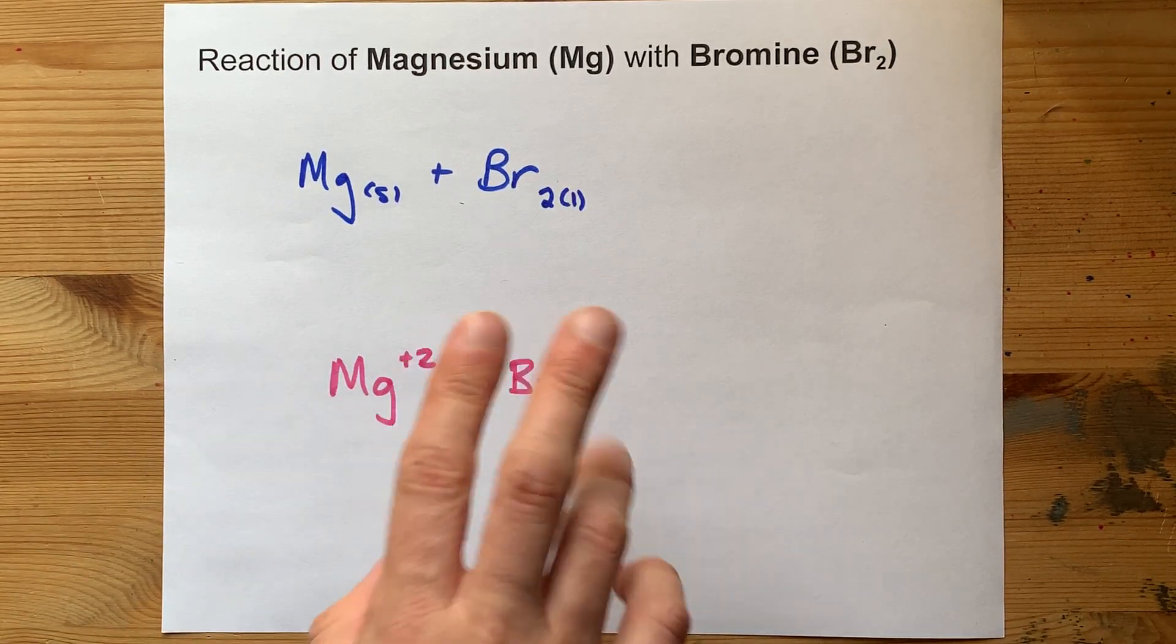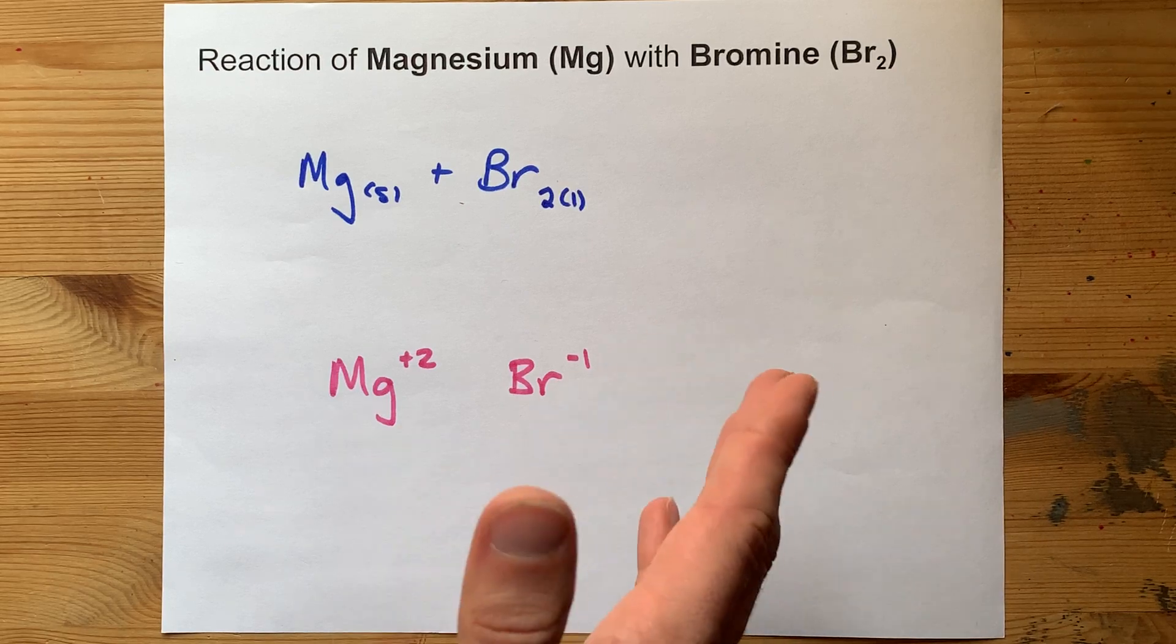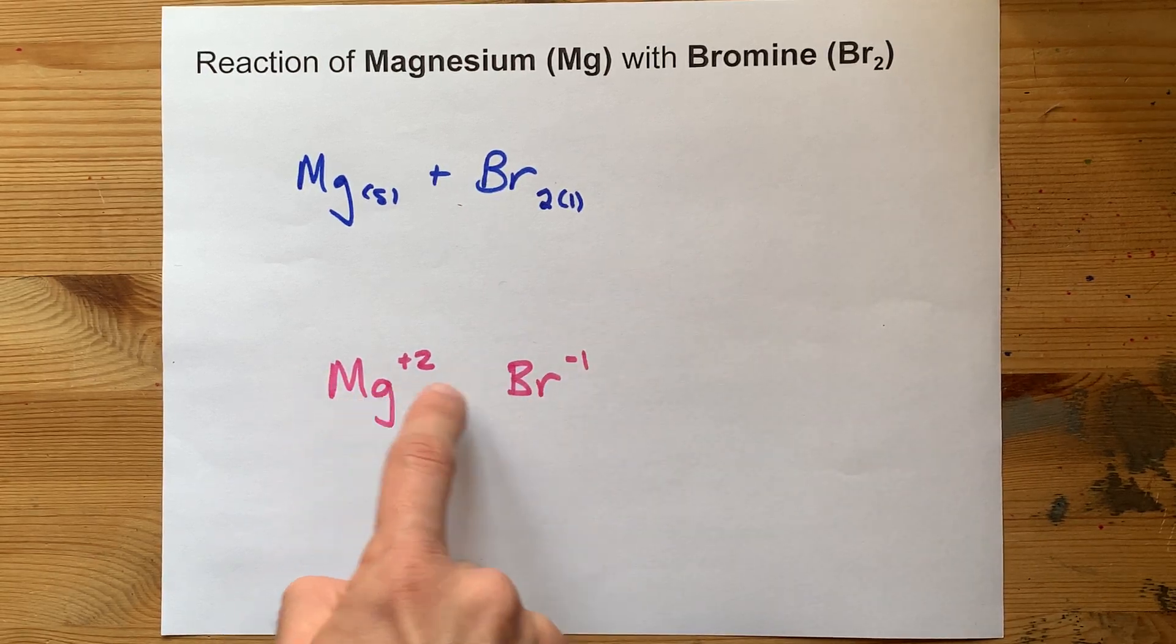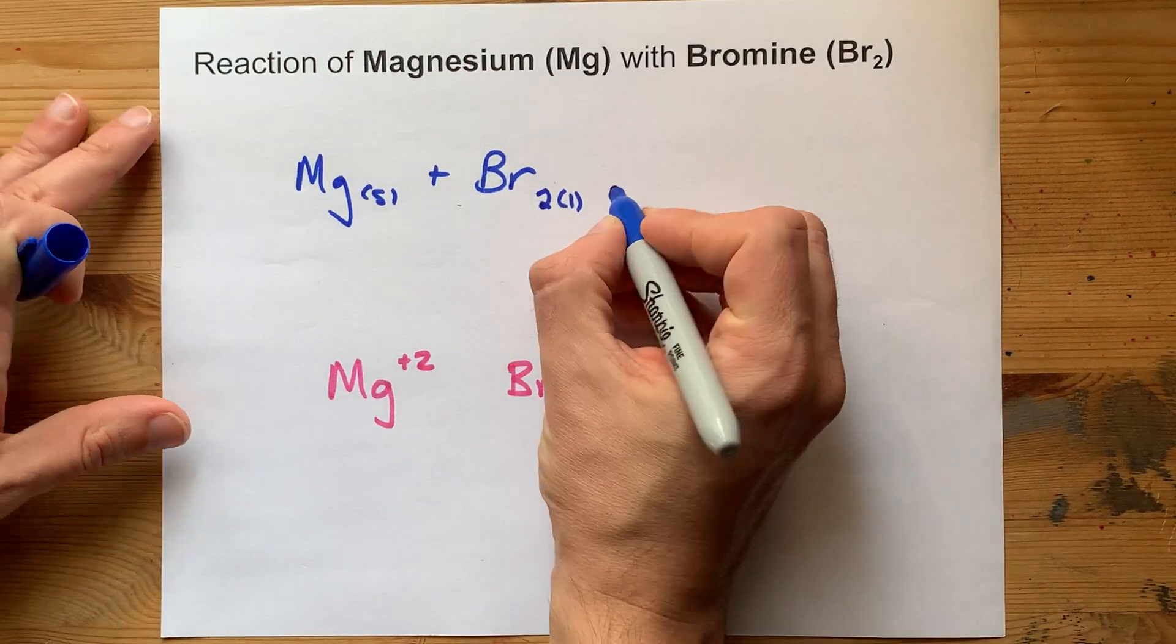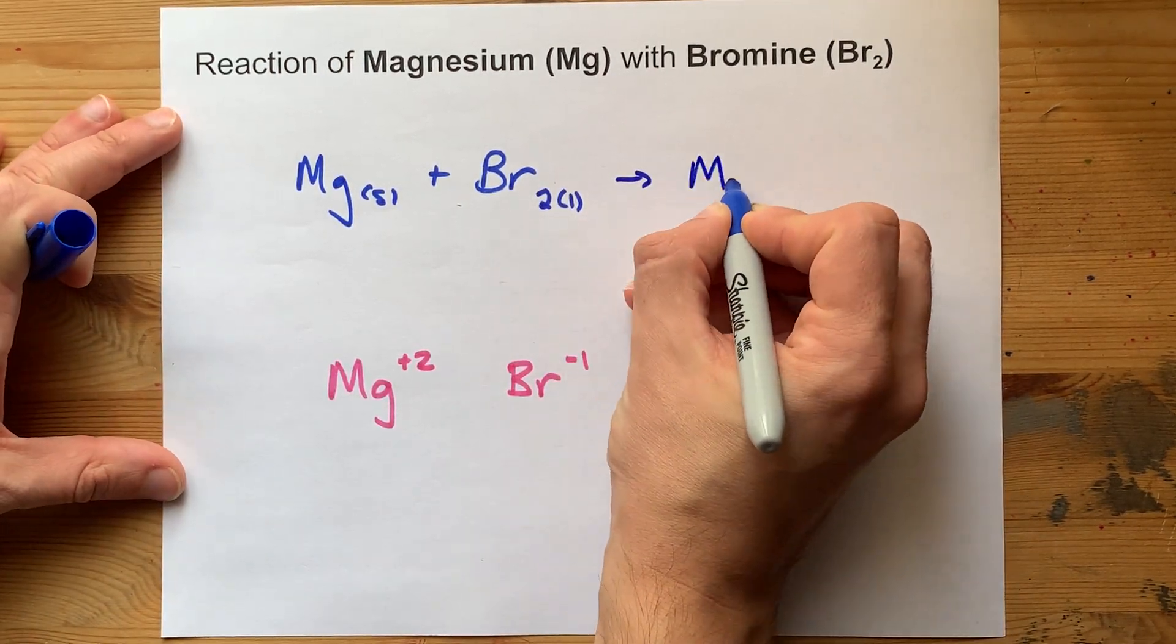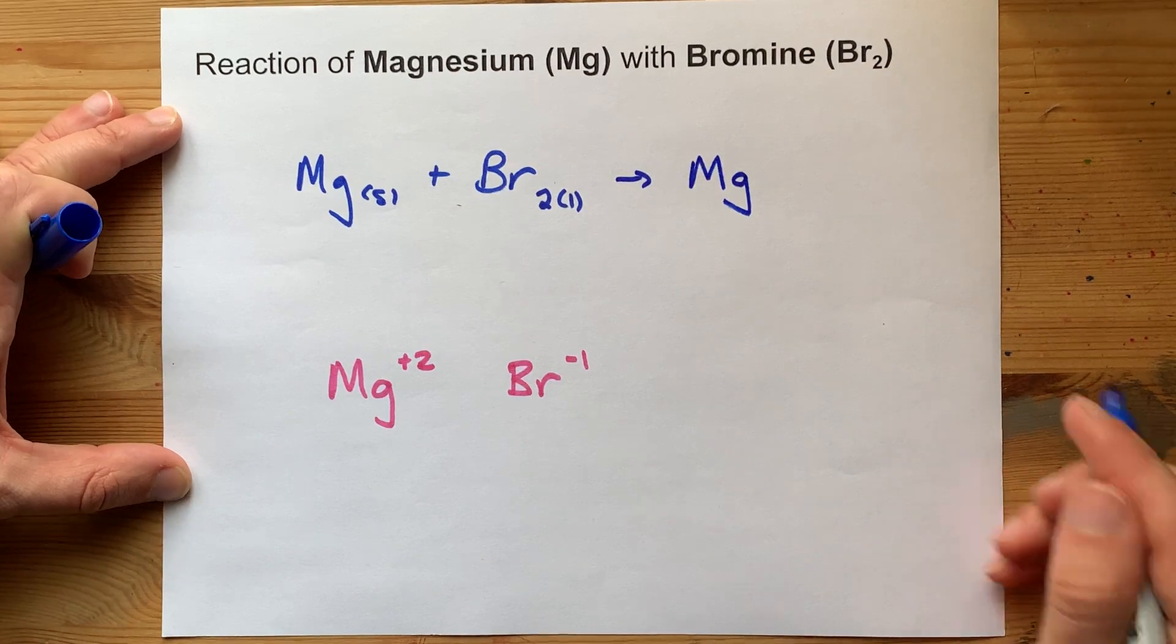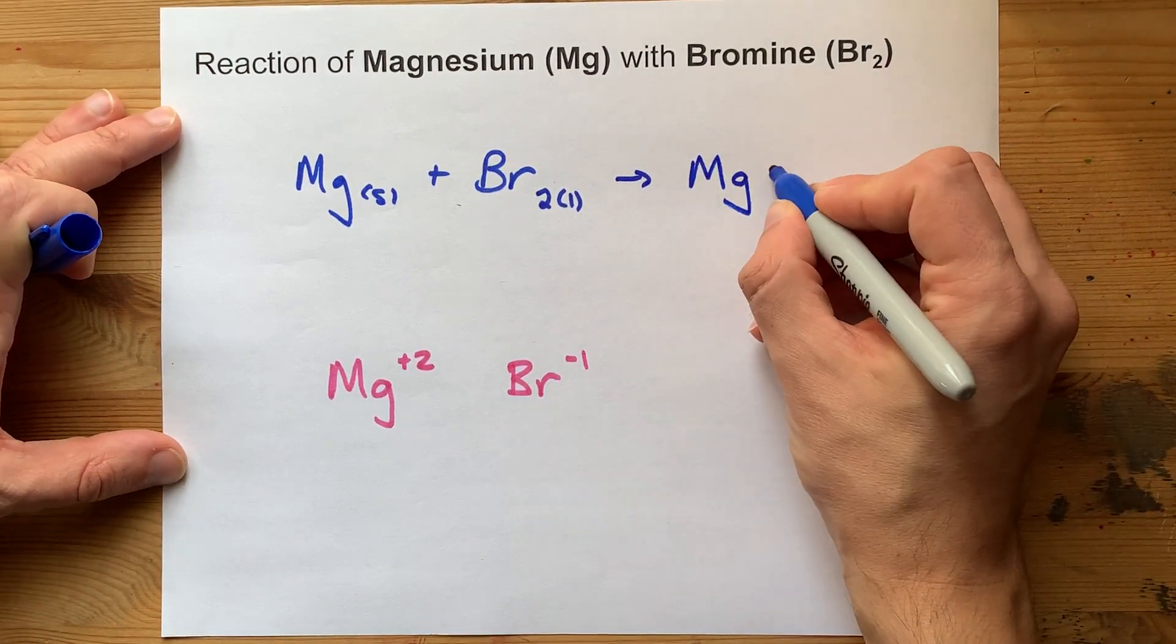When you are creating a binary ionic compound, that is a combination of one metal and one non-metal, you crisscross your charges to get the chemical formula of the product. In this case, it's Mg1, but we don't write the one.